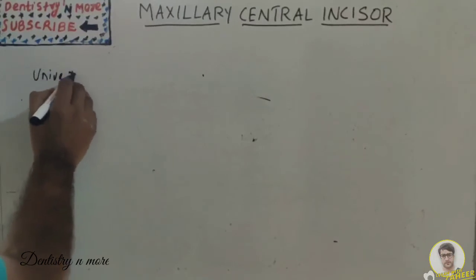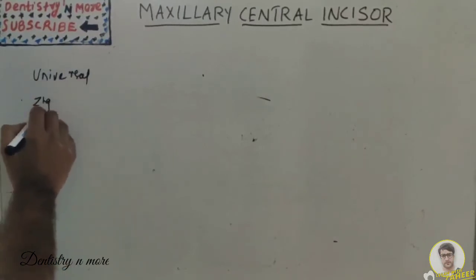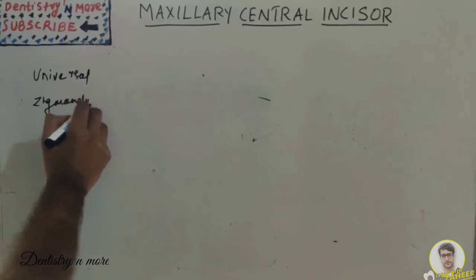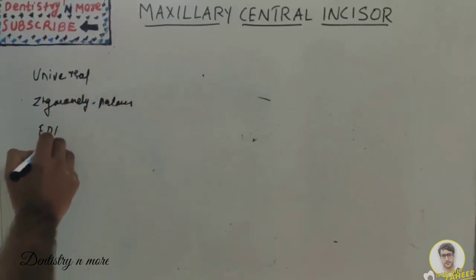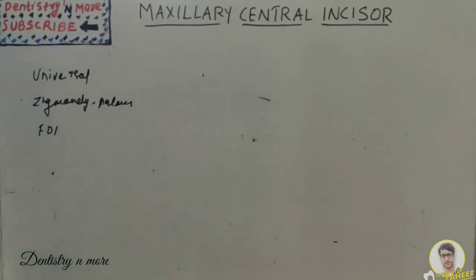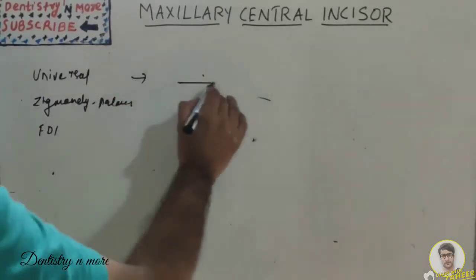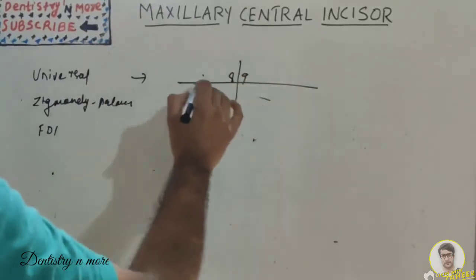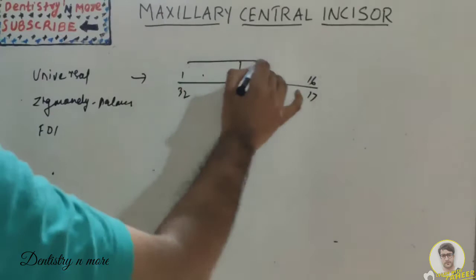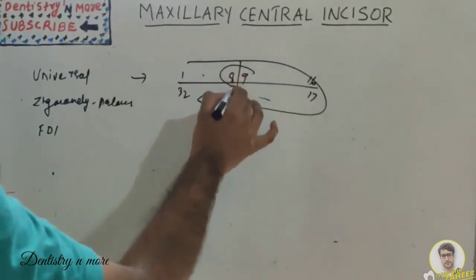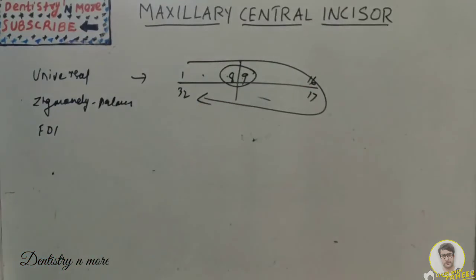Regarding the numbering systems, there are basically three: the Universal system, the Zsigmondy-Palmer system, and the FDI system, which is the most widely accepted and currently used. In the Universal system, numbers run from 1 to 32 — the right maxillary central incisor is 8 and the left is 9.